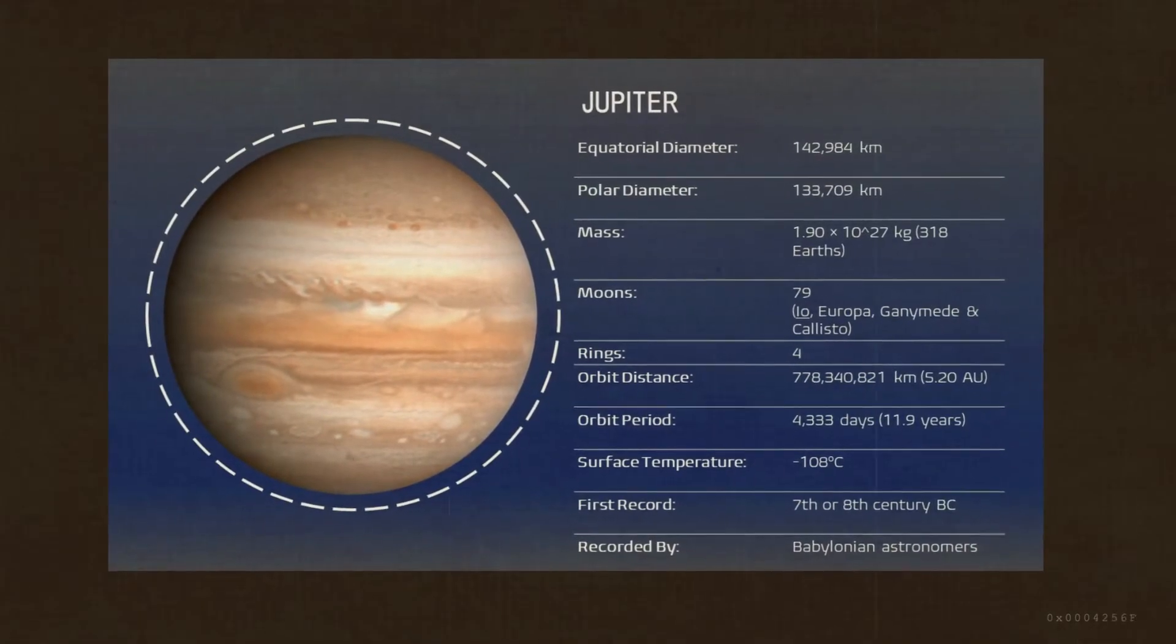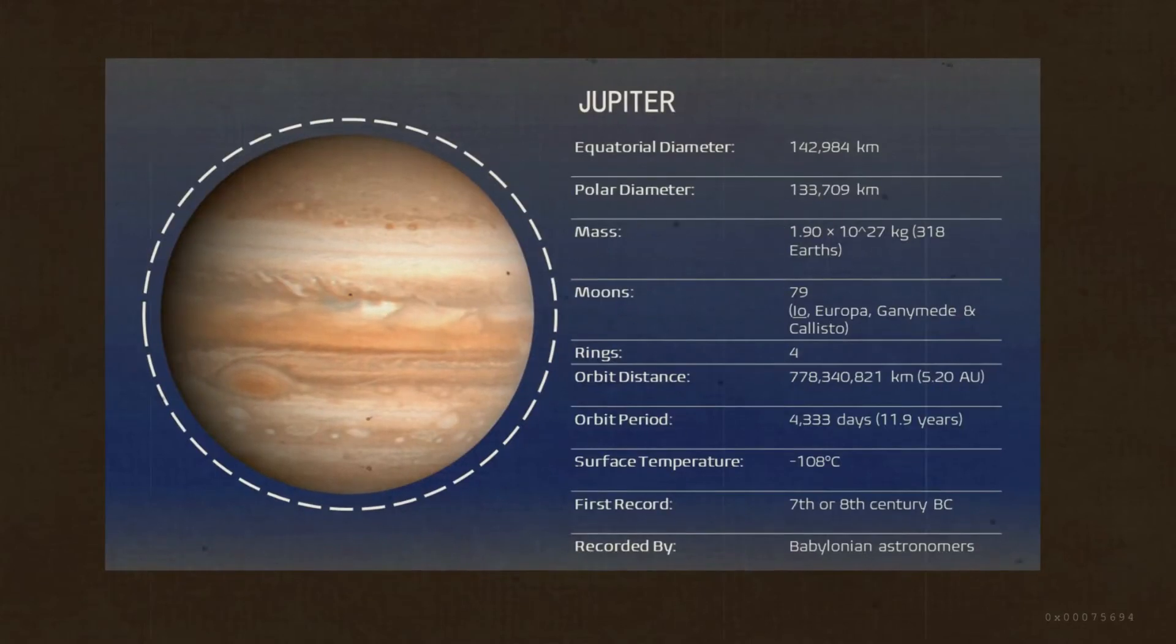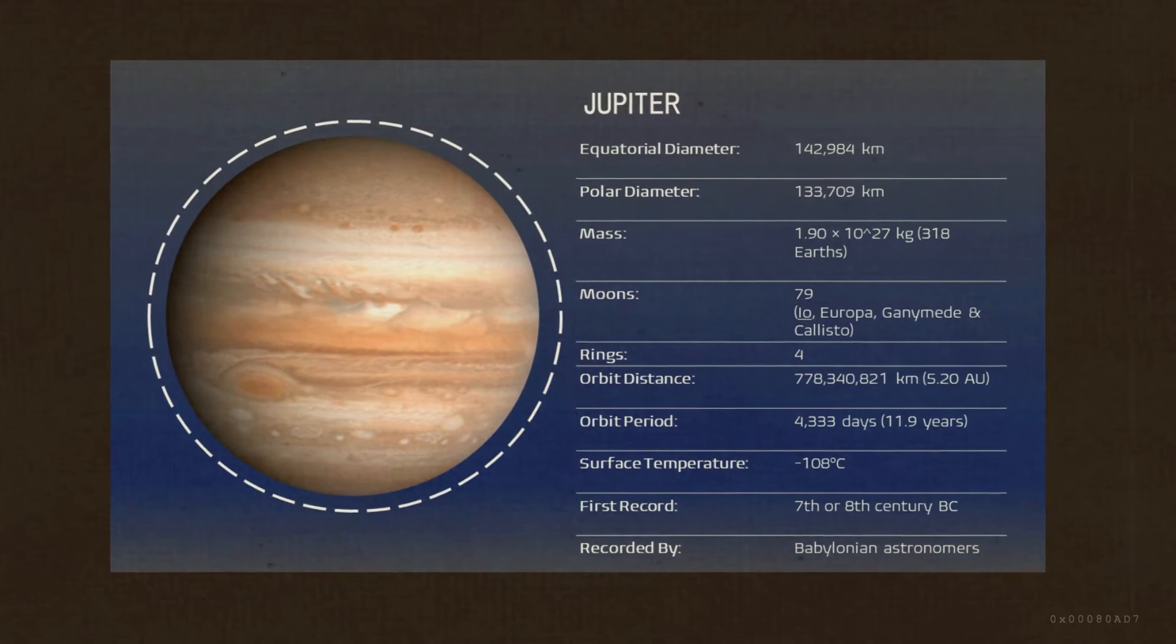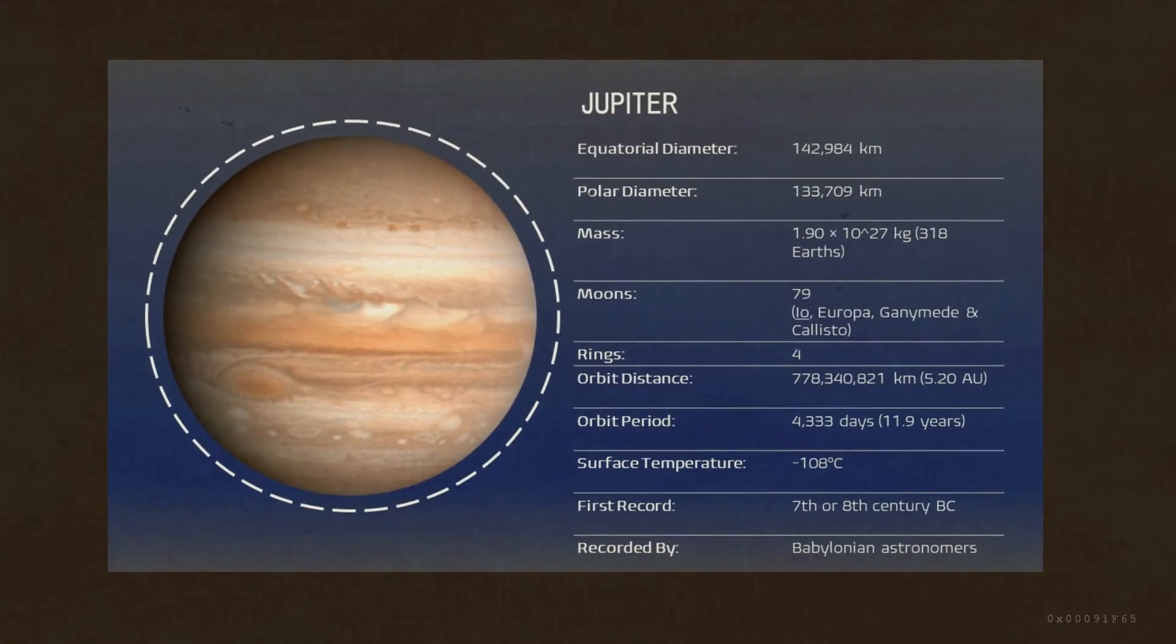Jupiter is the largest planet in our solar system. Its immense size can actually fit 1,300 Earths inside. Its great red spot is a huge storm that has raged for at least 250 years.